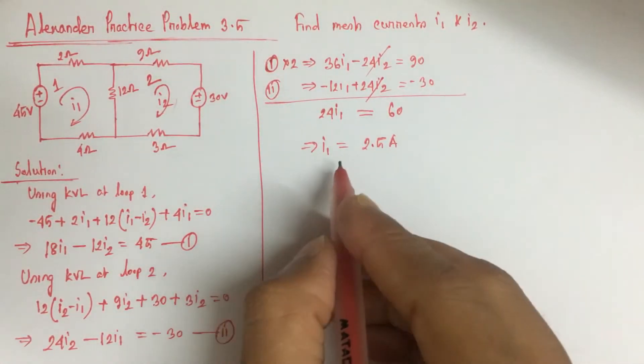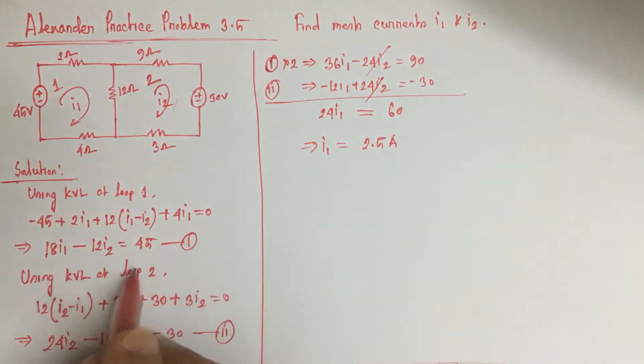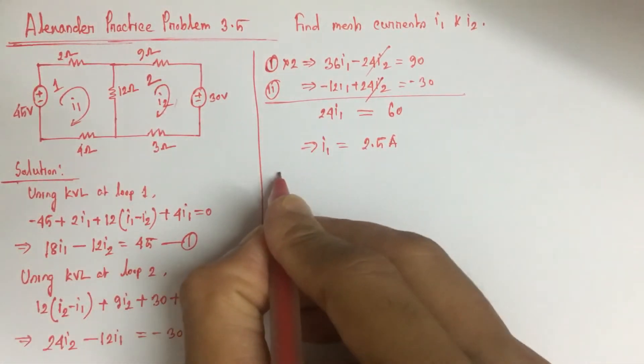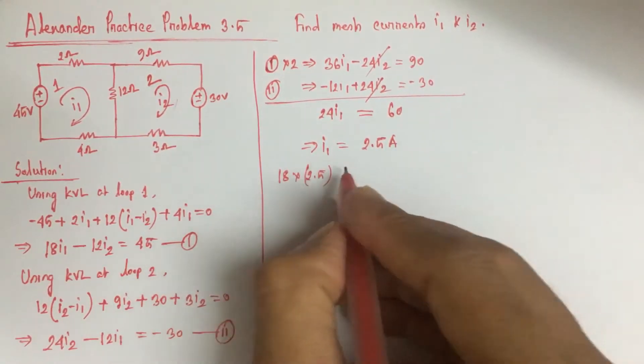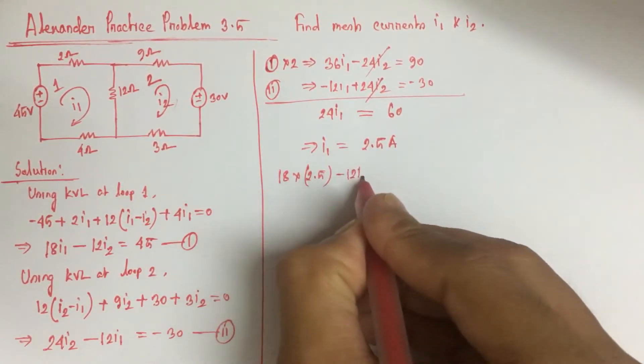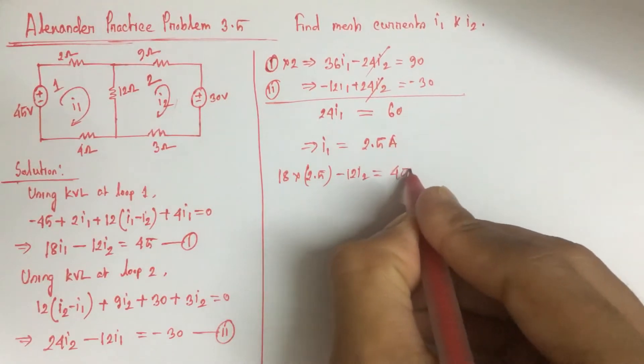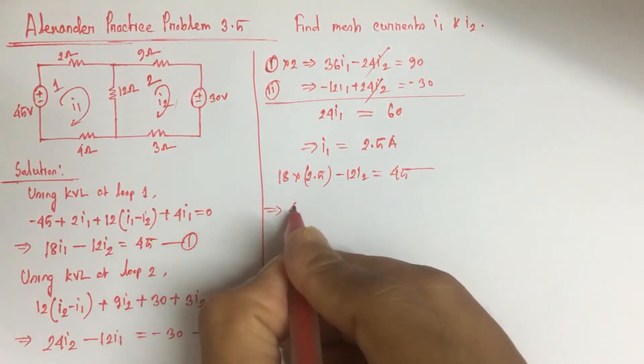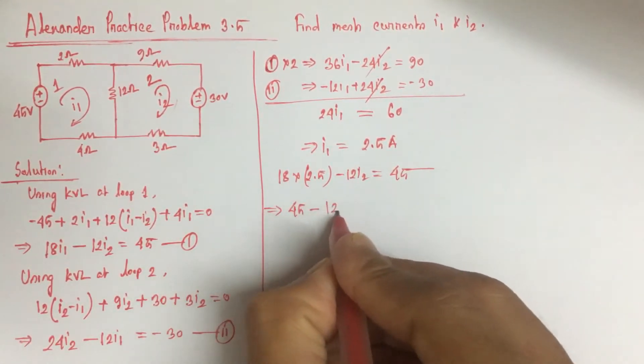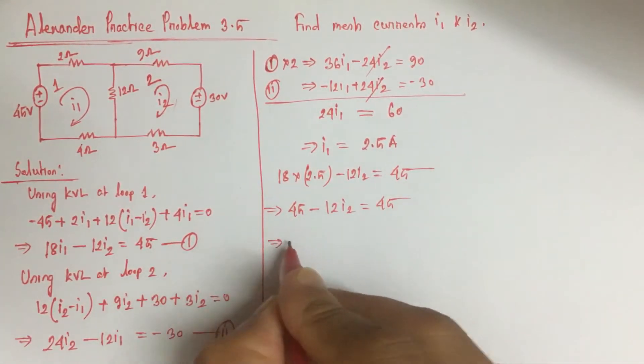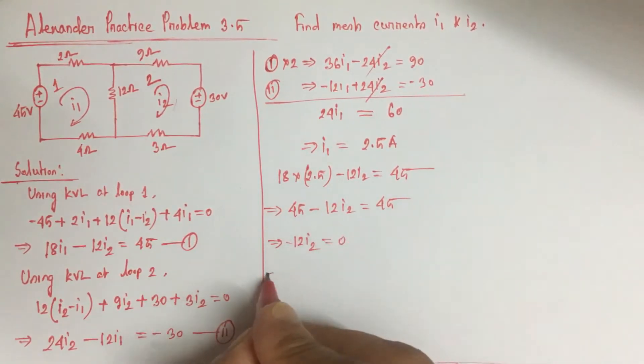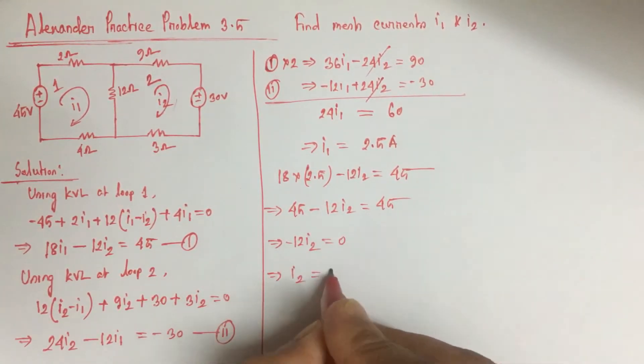Now if we use the value of I1 in equation 1, we will have 18 into 2.5 minus 12I2 equals 45. This is 45 minus 12I2 equals 45. That is 12I2 equals 0. That is I2 equals 0.